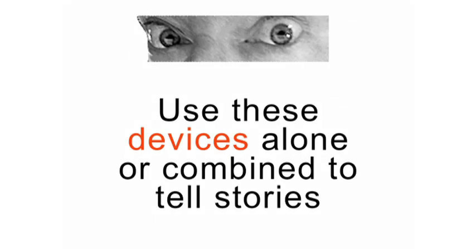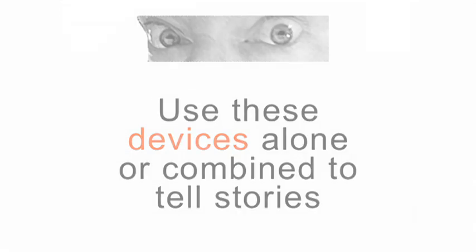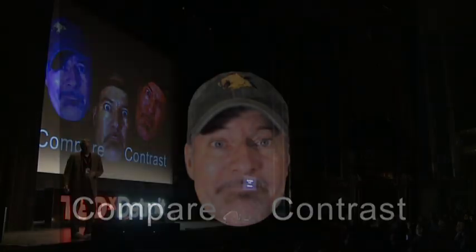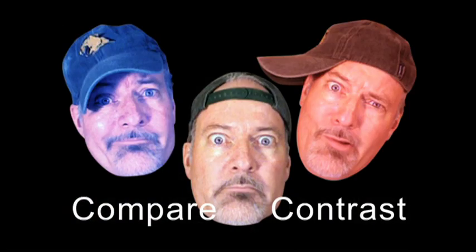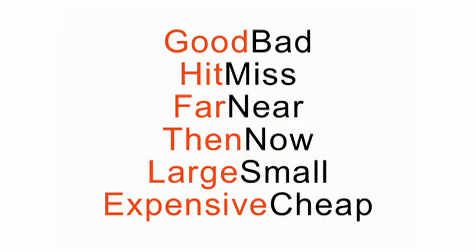Once you've got your data and all of that, you're wondering what kinds of things can I combine? These are visual devices that everybody uses — they work for a lot of things but they're really great for graphics. Do compare and contrast: look for good versus bad, hit or miss, far or near, then and now, large or small, expensive or cheap. You can just say 'big,' but unless you put it next to something small or average size, you're not going to get any idea of it. Look for opportunities to compare and contrast.